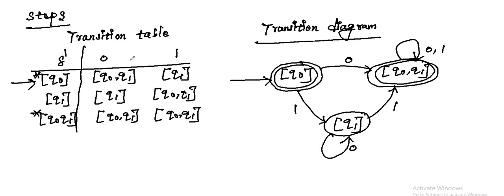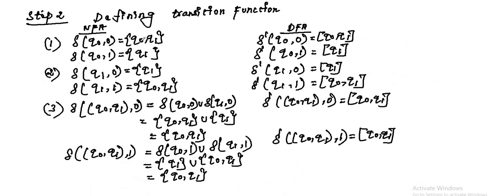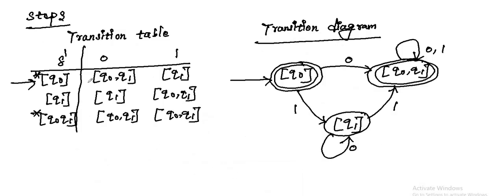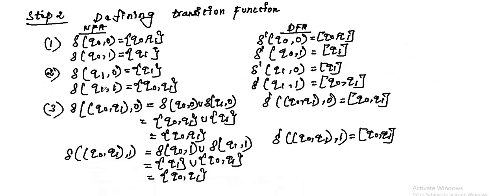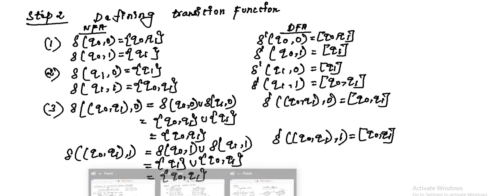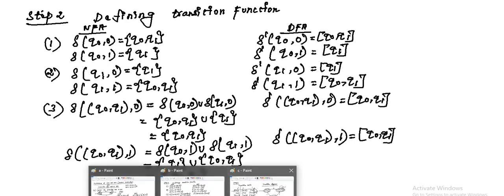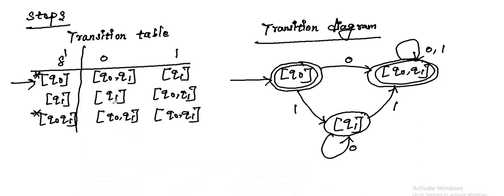Applying inputs 0 and 1: Q0 with input 0 goes to {Q0, Q1}, and Q0 with input 1 goes to Q1. In the transition table: Q0 maps to {Q0, Q1} on 0 and Q1 on 1. Q1 with input 0 goes to Q1, and Q1 with input 1 goes to {Q0, Q1}. Similarly, {Q0, Q1} with input 0 goes to {Q0, Q1}, and {Q0, Q1} with input 1 goes to {Q0, Q1}.